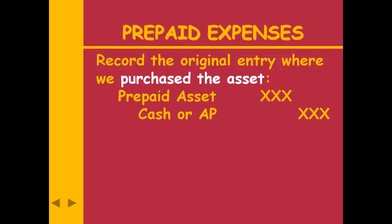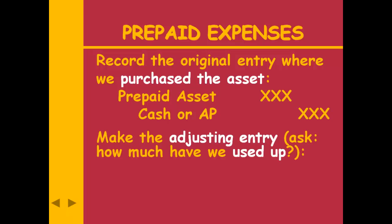At the end of the period, we're going to determine how much we have used up. Let's use supplies as an example. When I use up supplies, I have less supplies — supplies is an asset going down. Assets go down with a credit. When we use up an asset, it becomes an expense, so I have more supplies expense, which goes up with a debit.